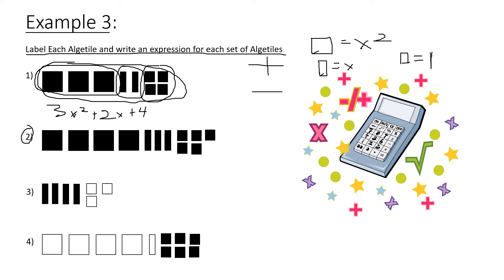Next example: there are 4 big boxes (x squared), 3 long sticks (x), and 5 small boxes (1), all shaded — so positive. Expression: 4x squared plus 3x plus 5. Number 3: there are 4 long sticks — so 4x — but the small boxes are not shaded in, so they are negative: 4x minus 3.